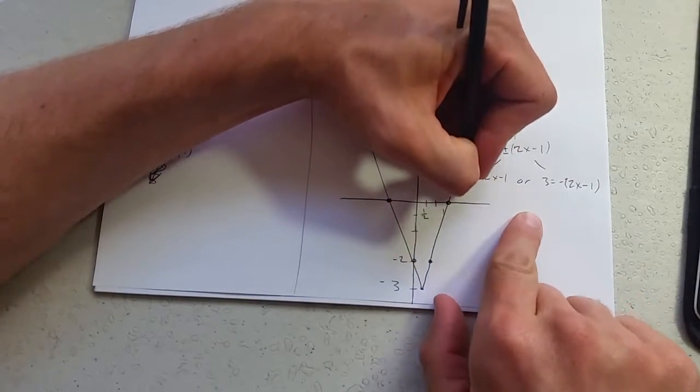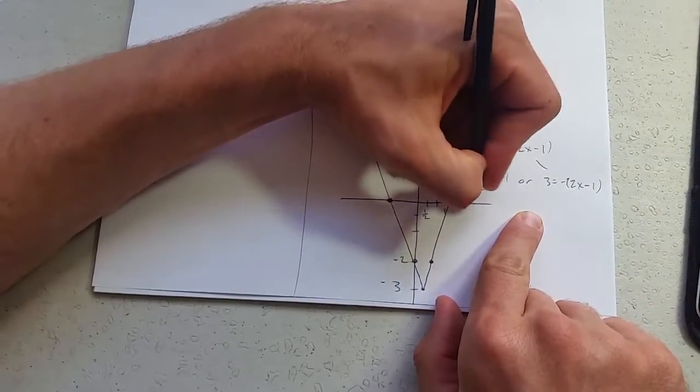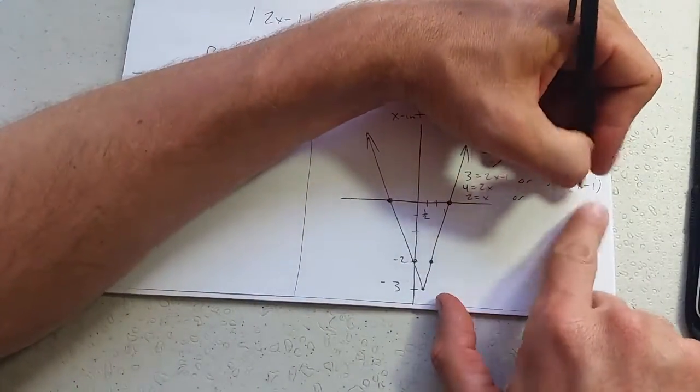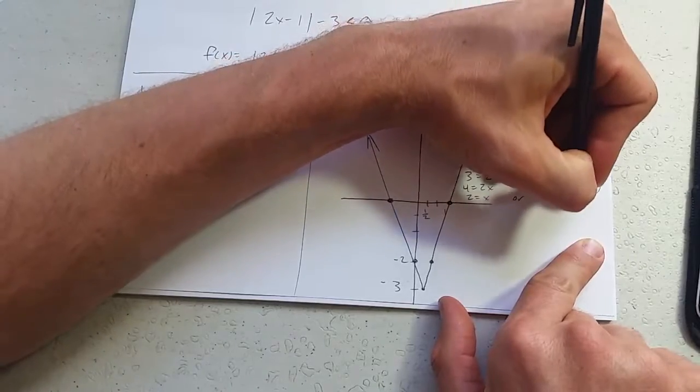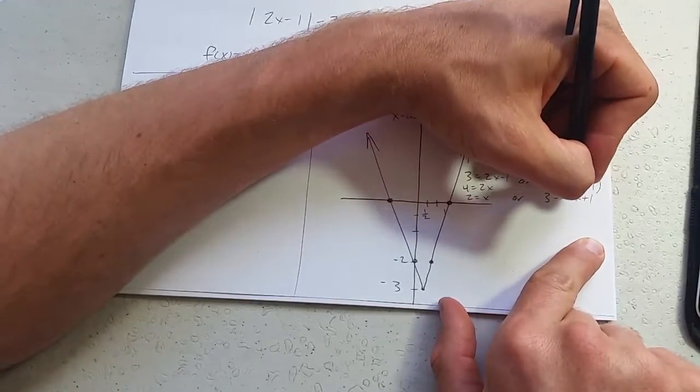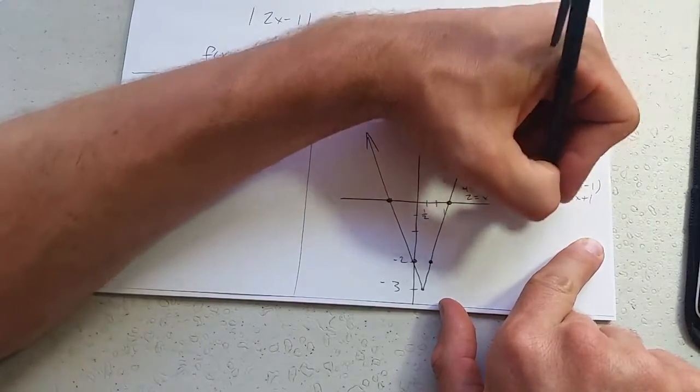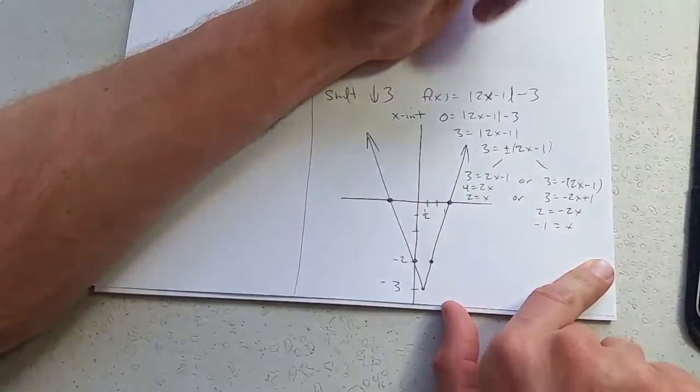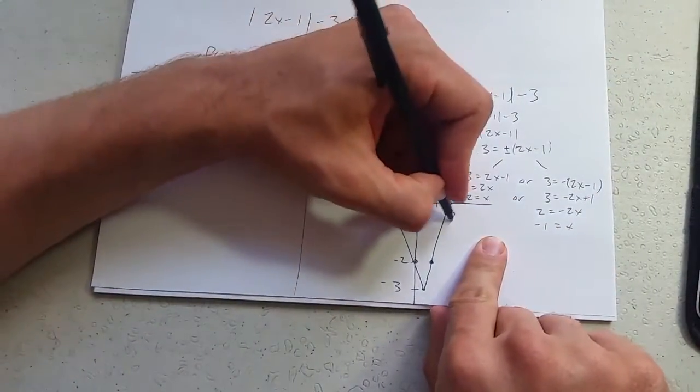Solving here. Add 1, 4 equals 2x, 2 equals x. Or let's distribute this. Negative 3 equals negative 2x plus 1. We'll subtract 1. Negative 4 equals negative 2x. x equals negative 1. So we got negative 1 and 2.